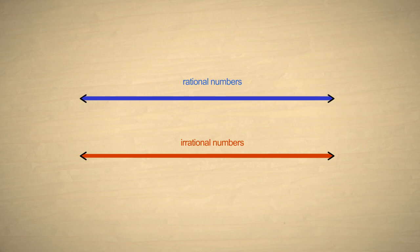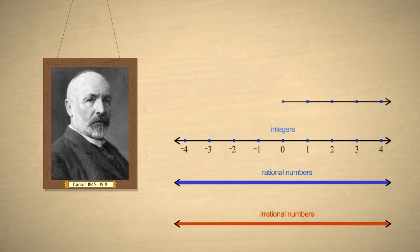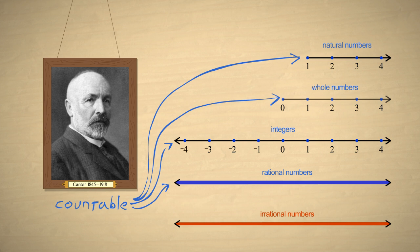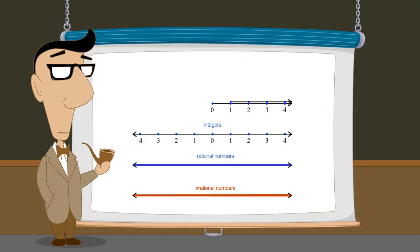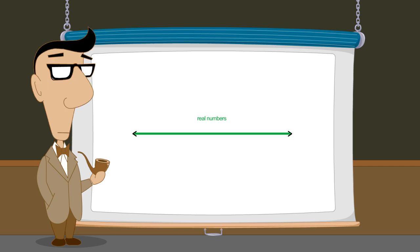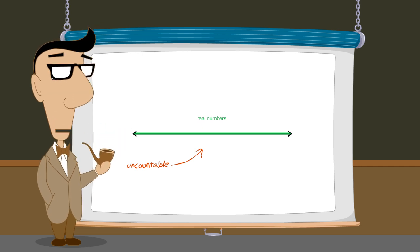But how can that be true if both collections of numbers are infinite? Until the late 1800s, mathematicians believed that nothing could be larger than anything that was infinitely large. But in 1874, Georg Cantor proved that there were different sizes of infinities. Rational numbers, integers, whole numbers, and natural numbers were infinite, but a particular type of infinite he called countable. Irrational numbers were also infinite, but what he called uncountable — a much larger infinity than the countable rational numbers. Cantor established a hierarchy of infinities. Since real numbers include irrational numbers which are uncountable, real numbers are also uncountable. In other words, the infinite collection of real numbers is the same size infinity as the infinite collection of irrational numbers.